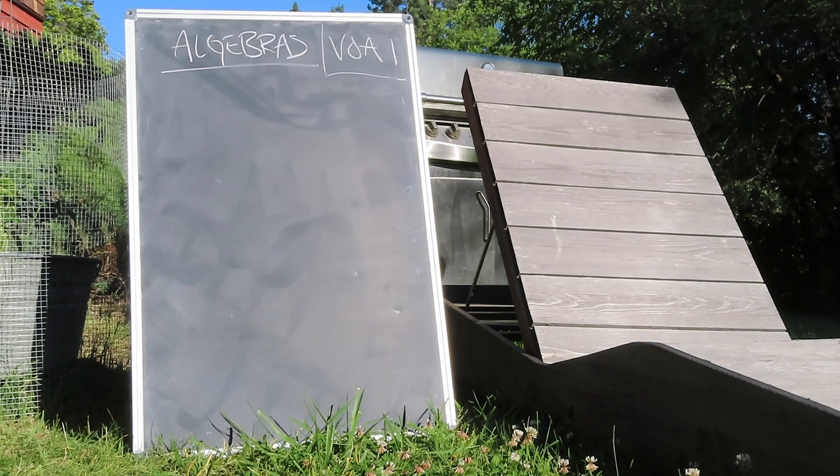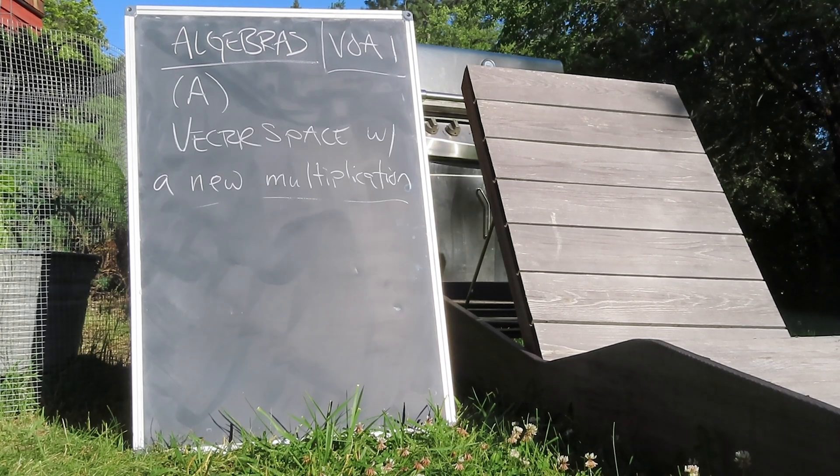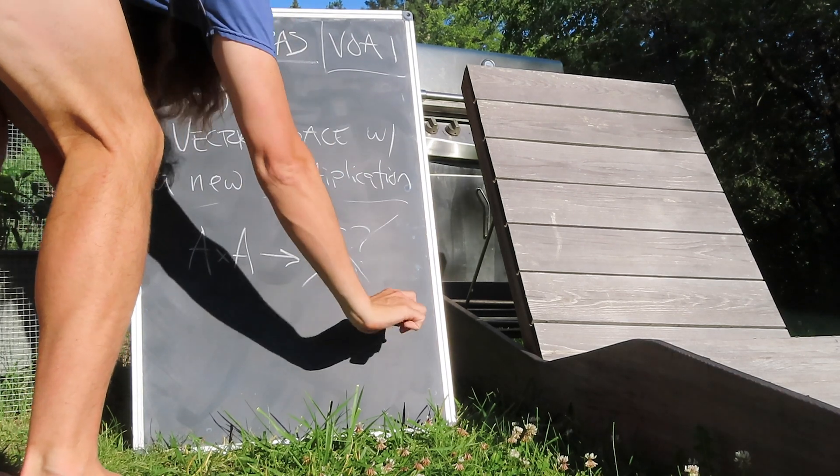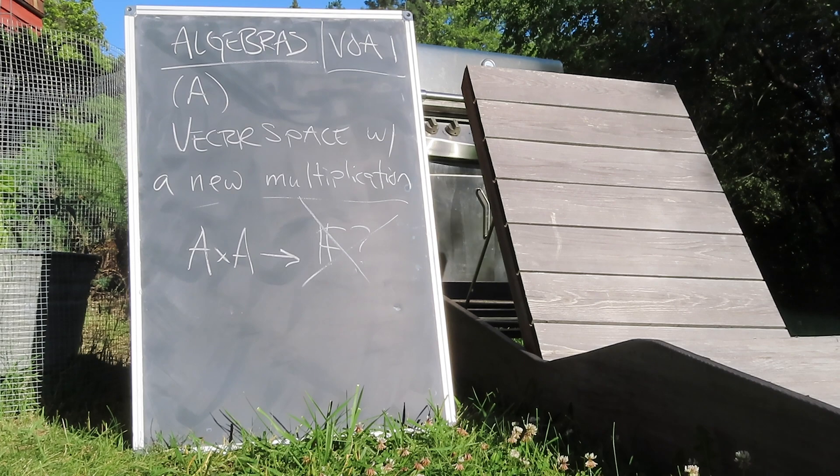And now for the topic du jour. A little a algebra is a vector space equipped with a multiplication between vectors. Note that this is not an inner product, which typically maps bilinearly to the underlying field.